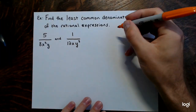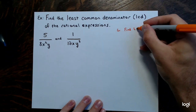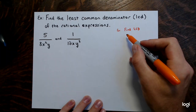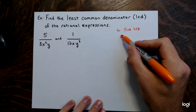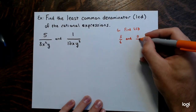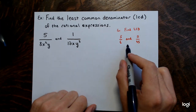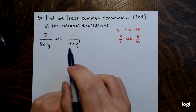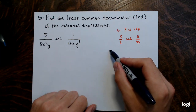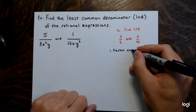Before working with variables, let me show a side example of finding the LCD — the least common multiple of the denominators — for fractions with just numbers: 5/6 and 11/45. The first step is to factor each denominator completely.